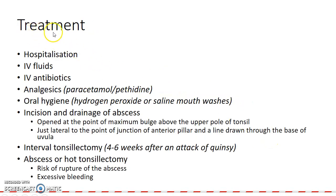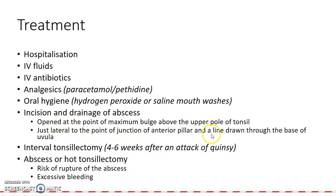How do you treat a case of peritonsillar abscess? Hospitalization is required. IV fluids should be given to correct dehydration, and IV antibiotics can be given. Analgesics like paracetamol or pethidine can be given. Oral hygiene should be maintained by hydrogen peroxide or saline mouthwashes. Incision and drainage of the abscess should be done, opened at the point of maximum bulge above the upper pole of the tonsil, or just lateral to the junction of the anterior pillar and a line drawn through the base of the uvula.